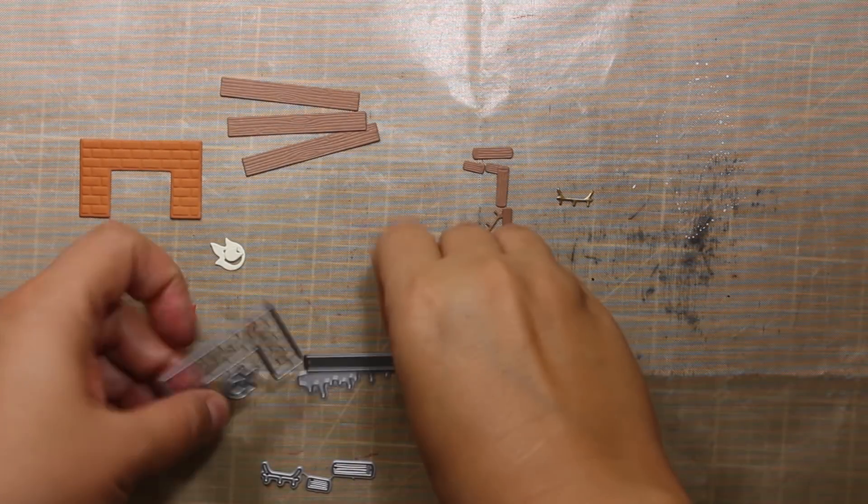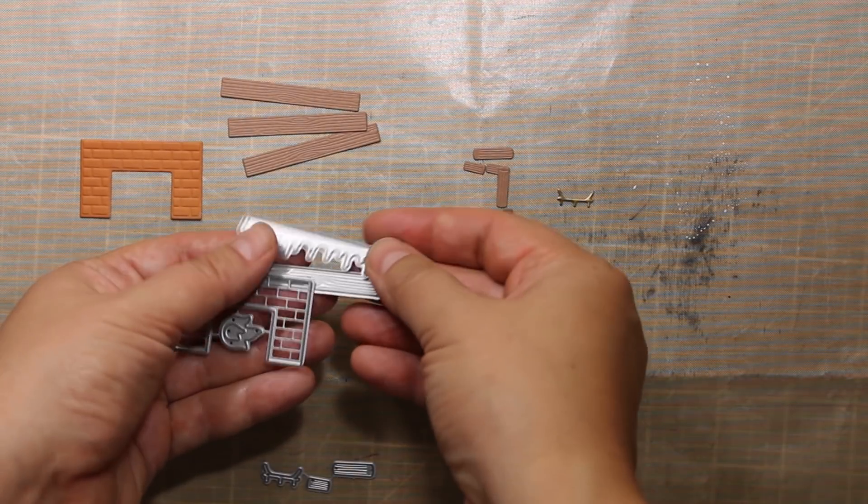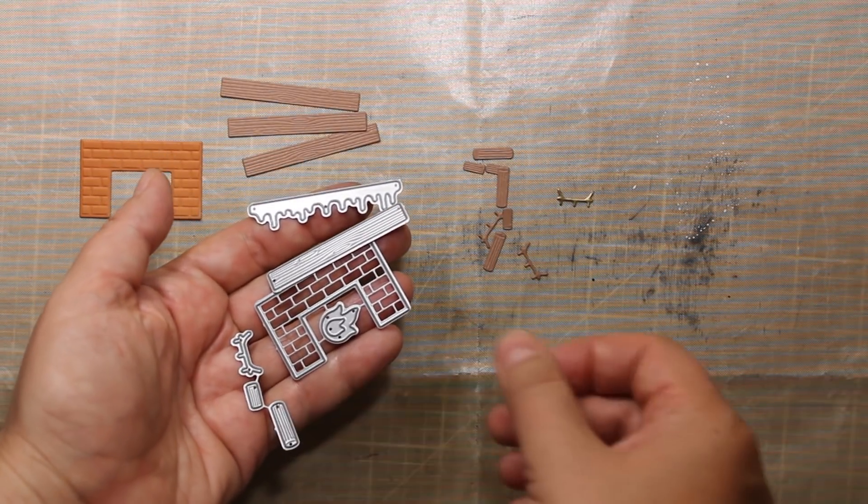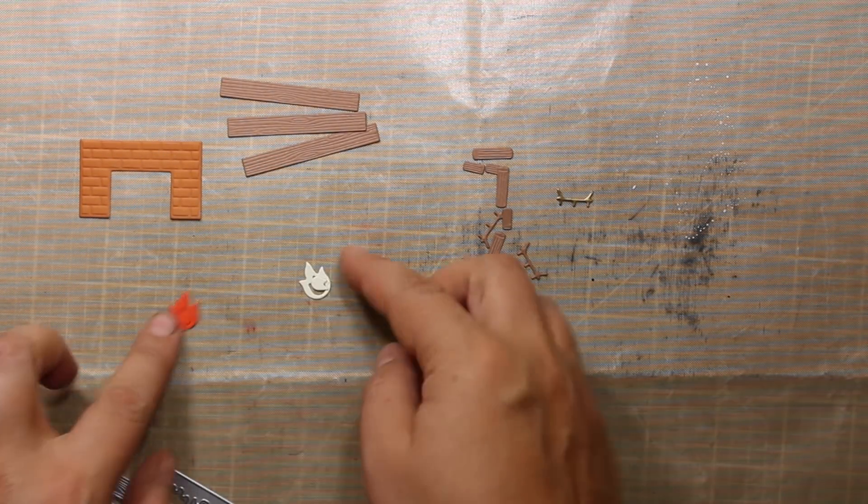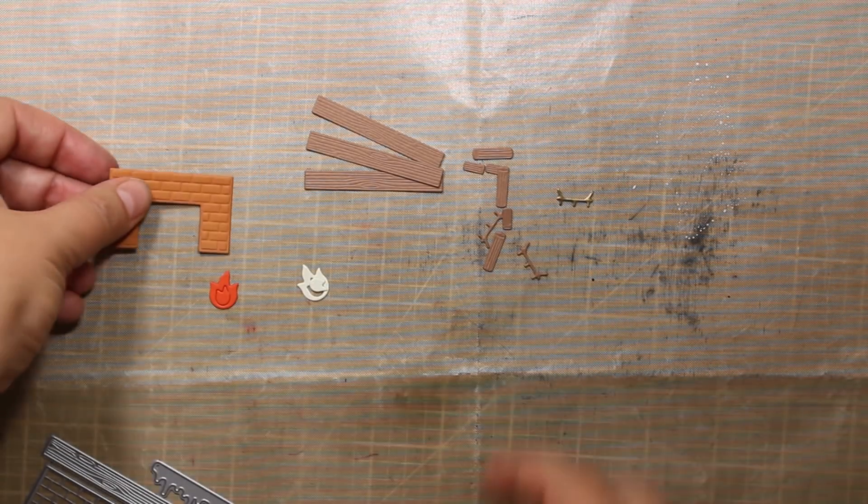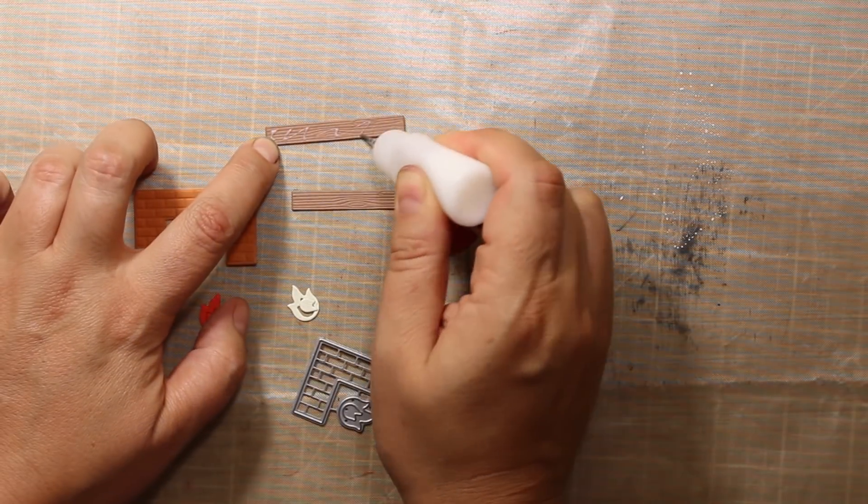My shadow box base is finally finished and now I'm ready to fill it in with different elements to create a scene. And my focal image is going to be created with this die set called Cozy Hearth. I've die cut and embossed all the elements out of orange and craft cardstocks.